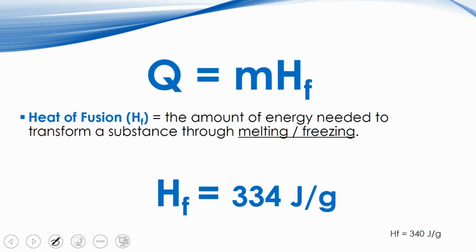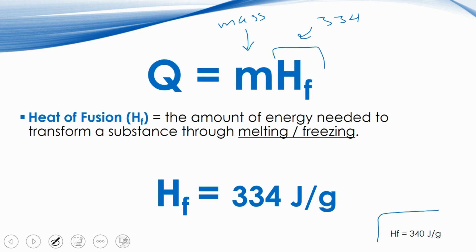The heat of fusion equation is q = m·Hf, where q is energy, m is mass, and Hf is the constant. For water, that constant is 334 J/g. Sometimes online you'll see 340, which is a rounded version, but in our class we use 334. Anytime you perform a calculation for melting or freezing specifically, this is the equation to use — we call it heat of fusion.